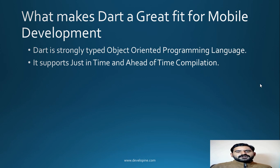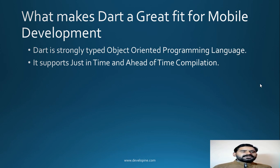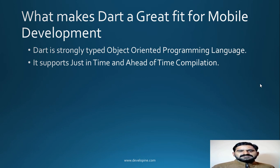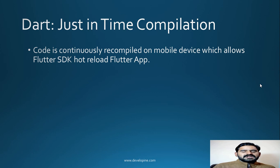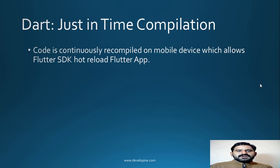Flutter uses Dart as a programming language because Dart is a strongly typed, object-oriented programming language. It has support for Just-In-Time (JIT) and Ahead-Of-Time (AOT) compilation. With JIT compilation, code is continuously recompiled on the mobile device on which your app is running, which allows Flutter's hot reload feature.